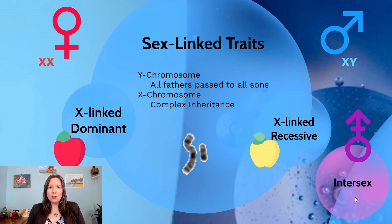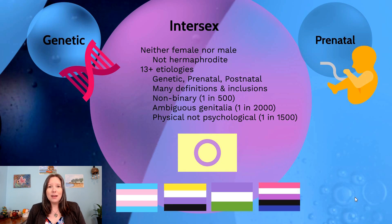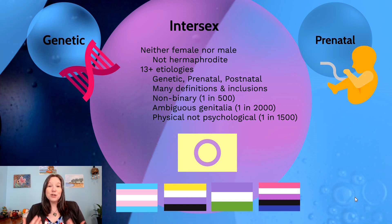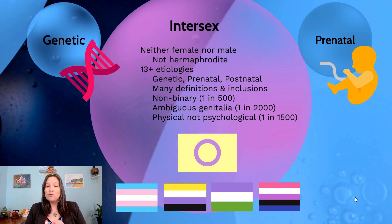It's important for us to acknowledge a genotypical condition known as intersex. Historically, intersex has been conflated with a few other terms, so it's important to acknowledge that intersex in humans is not the same as being a hermaphrodite in non-human species. The term hermaphrodite refers to an organism that has both female and male gonads and may have the possibility to reproduce with itself. There's no such thing as humans who are hermaphrodites.